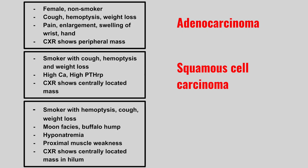Next, we have a smoker with hemoptysis, cough and weight loss, a moon-shaped face or buffalo hump, or they could have hyponatremia or proximal muscle weakness. Chest x-ray shows a centrally located mass in the hilum. This is small cell carcinoma.